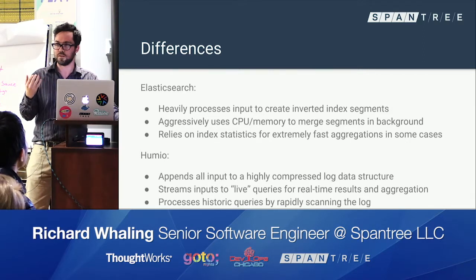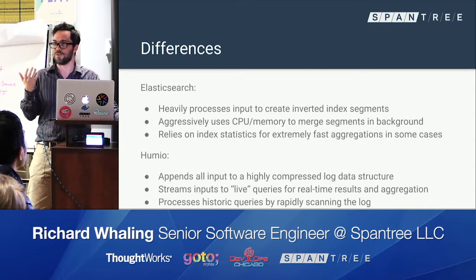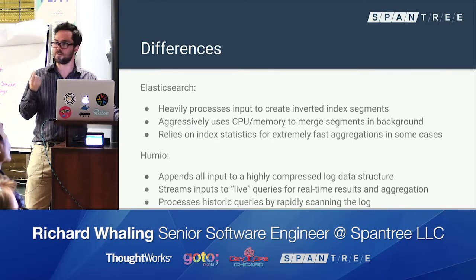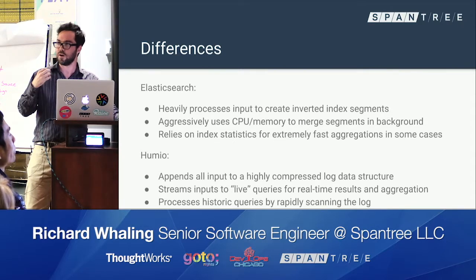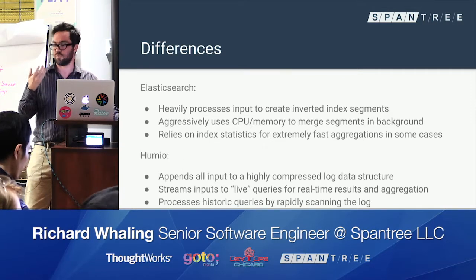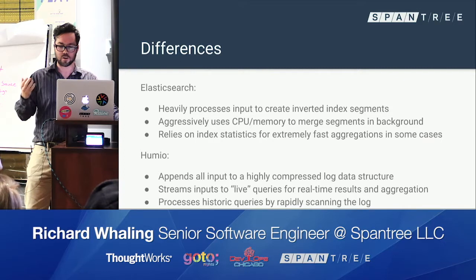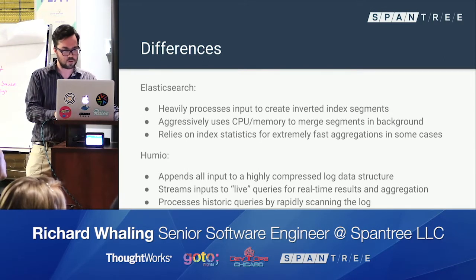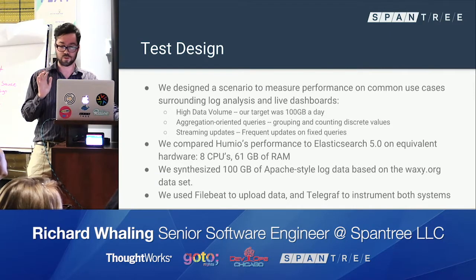Humio is radically different. As Creston was saying, it's basically a time series database for text. It has an append-only compressed log data structure. What's really neat about it is it has a very explicit notion of time and especially of now — all the data up to right now is streamed into these registered live queries. But there's also the capacity to do historic queries at the same time, with slightly different characteristics for those two kinds of queries.